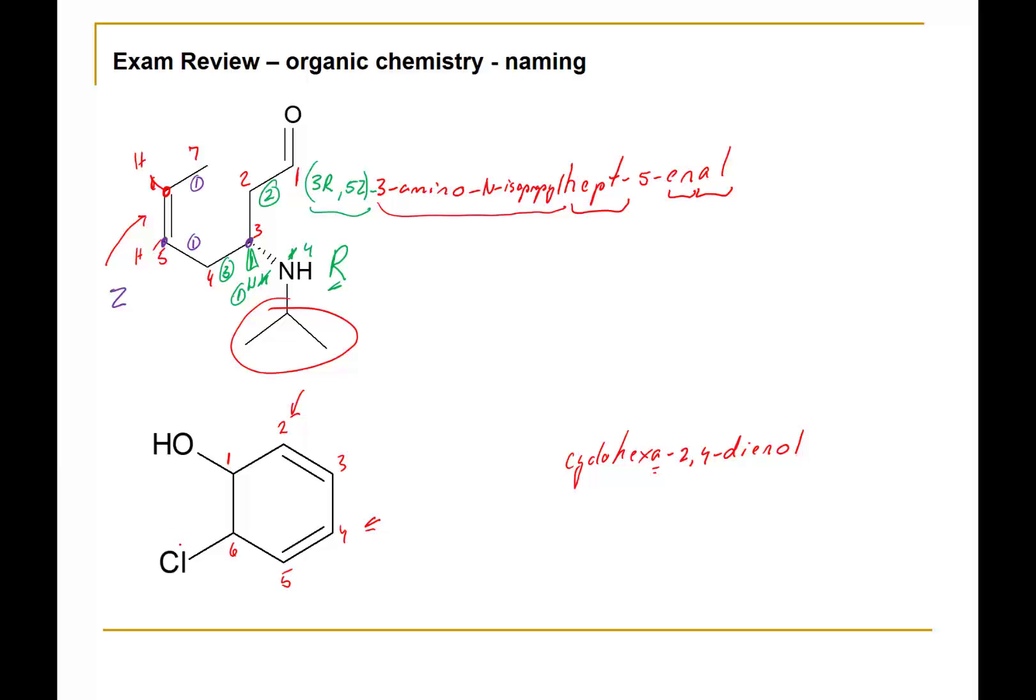We do have the substituent. It's on carbon number six. Note it's not on carbon number two because of course double bonds have a higher priority. So this would be therefore 6-chloro-cyclohexa-2,4-dienol.